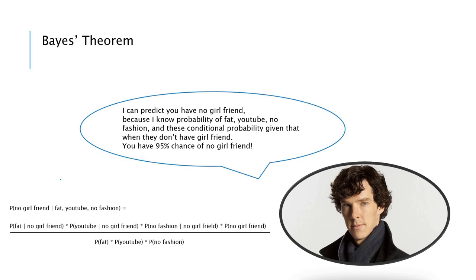I can predict you have no girlfriend because I know probability of fat, YouTube, no fashion, and there's a conditional probability given that when they don't have a girlfriend. And because of this Bayes' theorem, he already had 95% prediction that you don't have a girlfriend. And you can see the formula here.